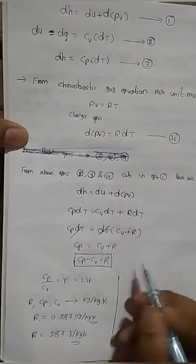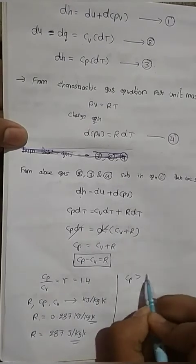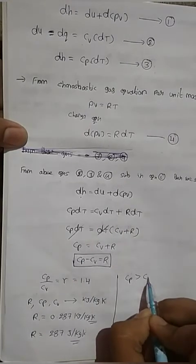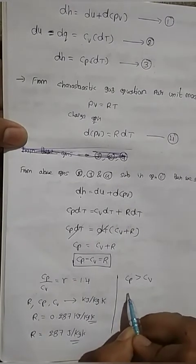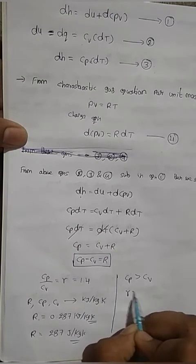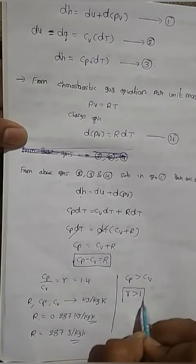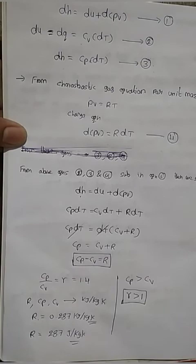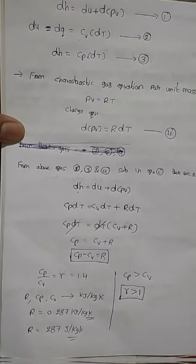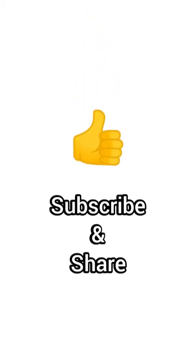These are some important relations of Cp, Cv, and R. One more thing to remember: Cp is always greater than Cv, which is why gamma is always greater than 1. I hope you got a good idea about these concepts. If you liked my explanation, please like this video and subscribe to our channel Mac Professor for more updates. Bye!